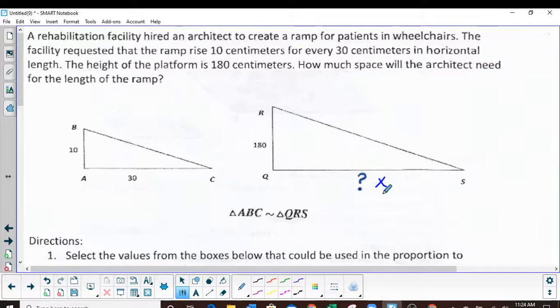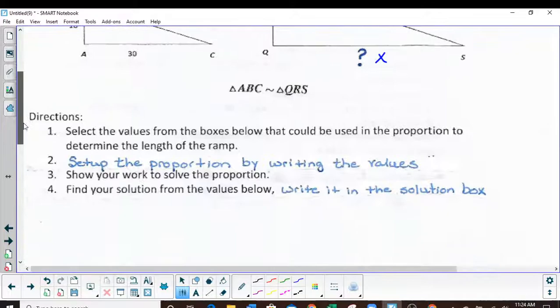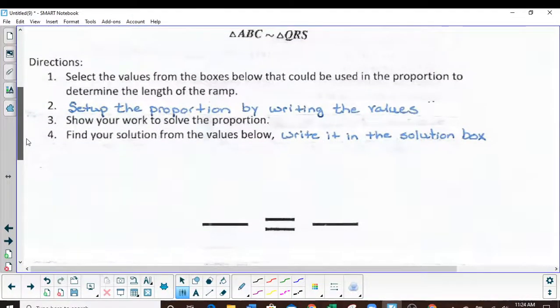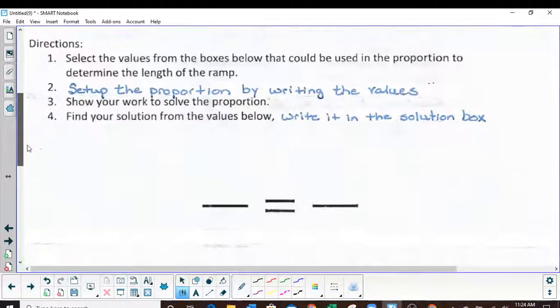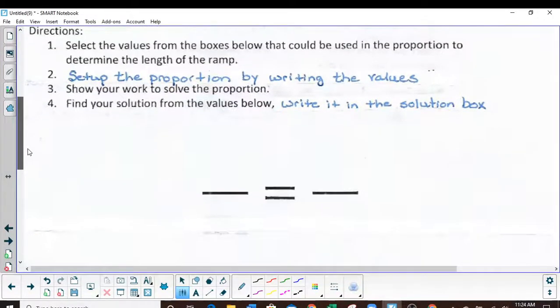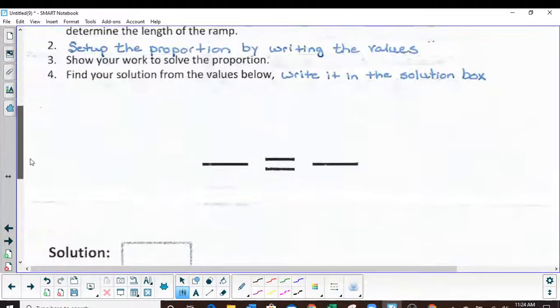So we're looking for that right there, and you can actually make that an X if you want to. The directions say select the values from the boxes below that could be used in a proportion to determine the length of the ramp. Set up the proportion by writing the values, show your work to solve the problem, find your solution from the base below, write it in the solution box.